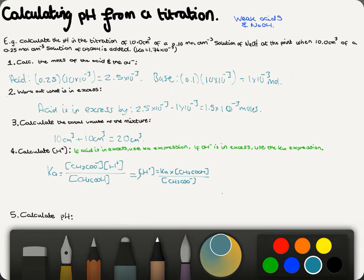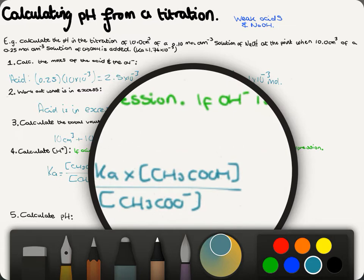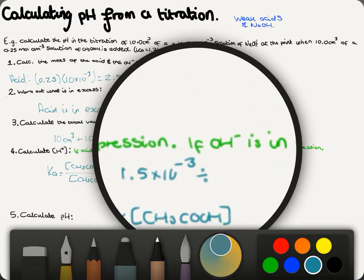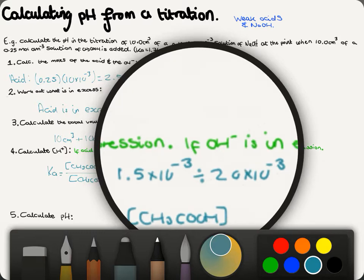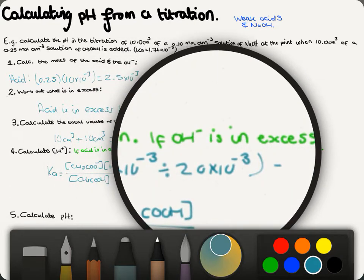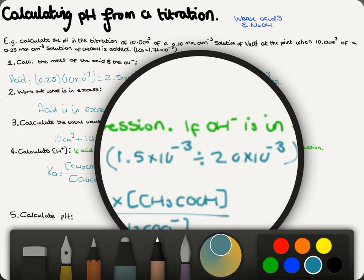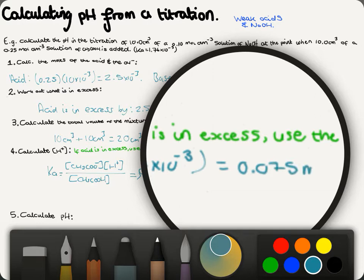The concentration of acid — remembering that's the acid in excess — is 1.5 × 10⁻³ divided by the volume, which is 20 × 10⁻³ dm³. That gives a concentration of acid of 0.075 mol dm⁻³.